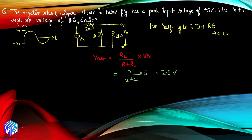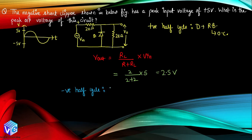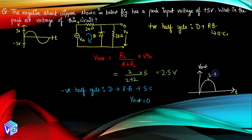During the negative half cycle, the diode conducts — it becomes forward biased and acts as a short circuit. All current passes through the least resistive path, so no current flows through the load, and V_output equals zero. Therefore the output waveform is present only for the positive half cycle with a peak voltage of 2.5 volt.